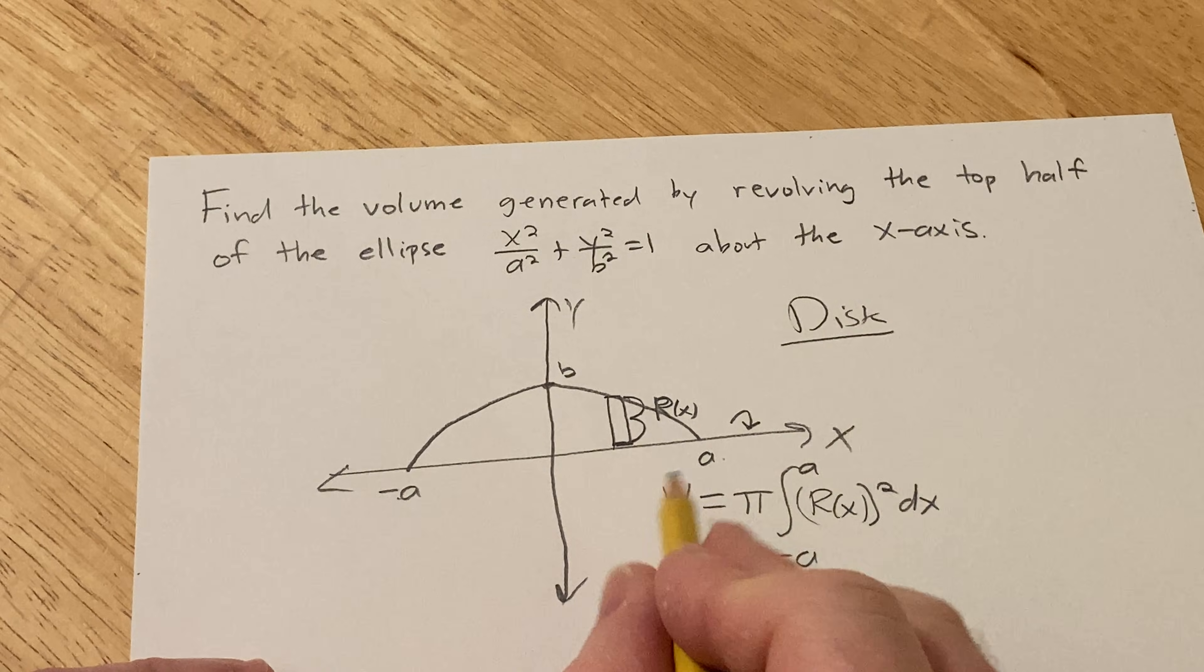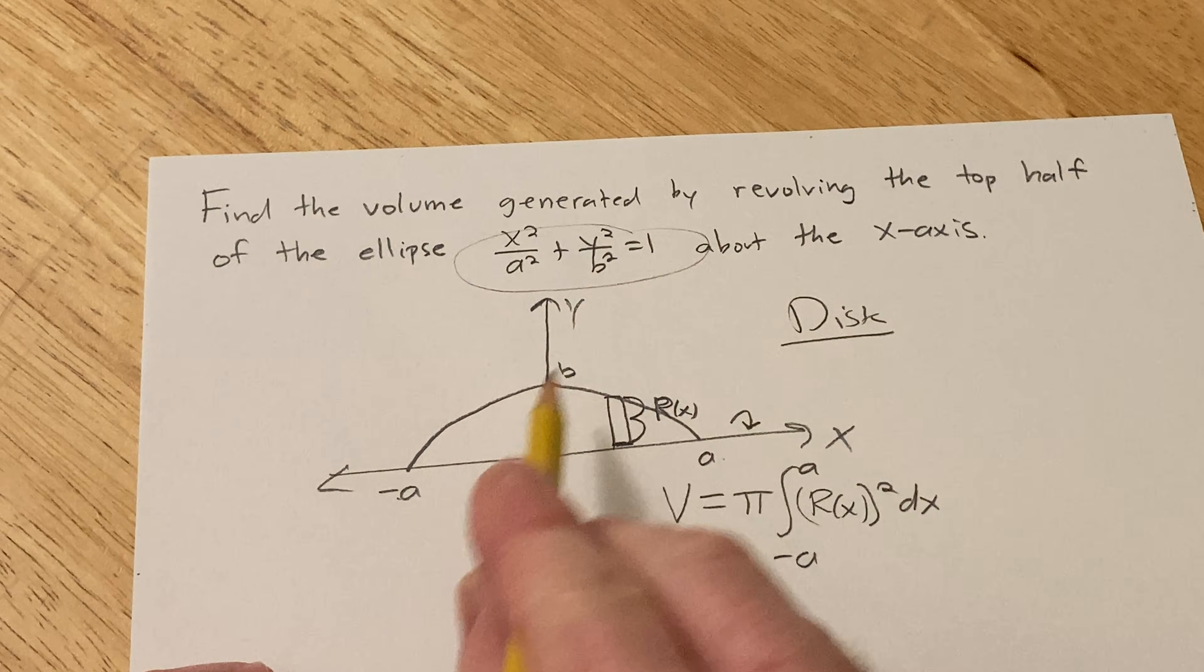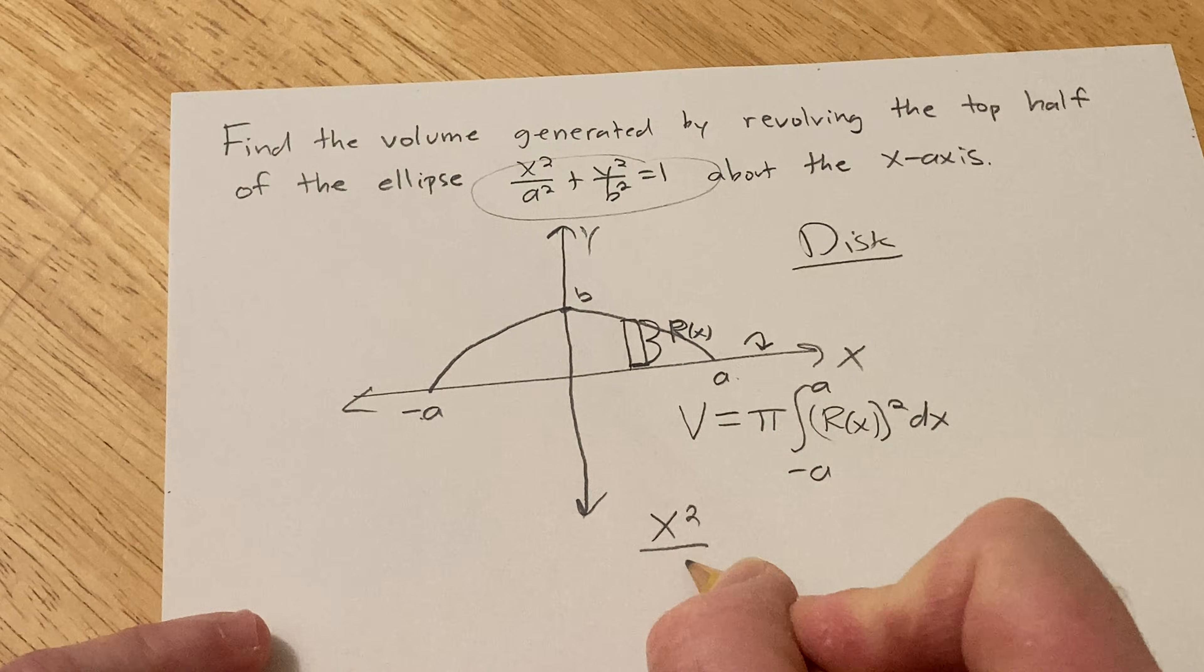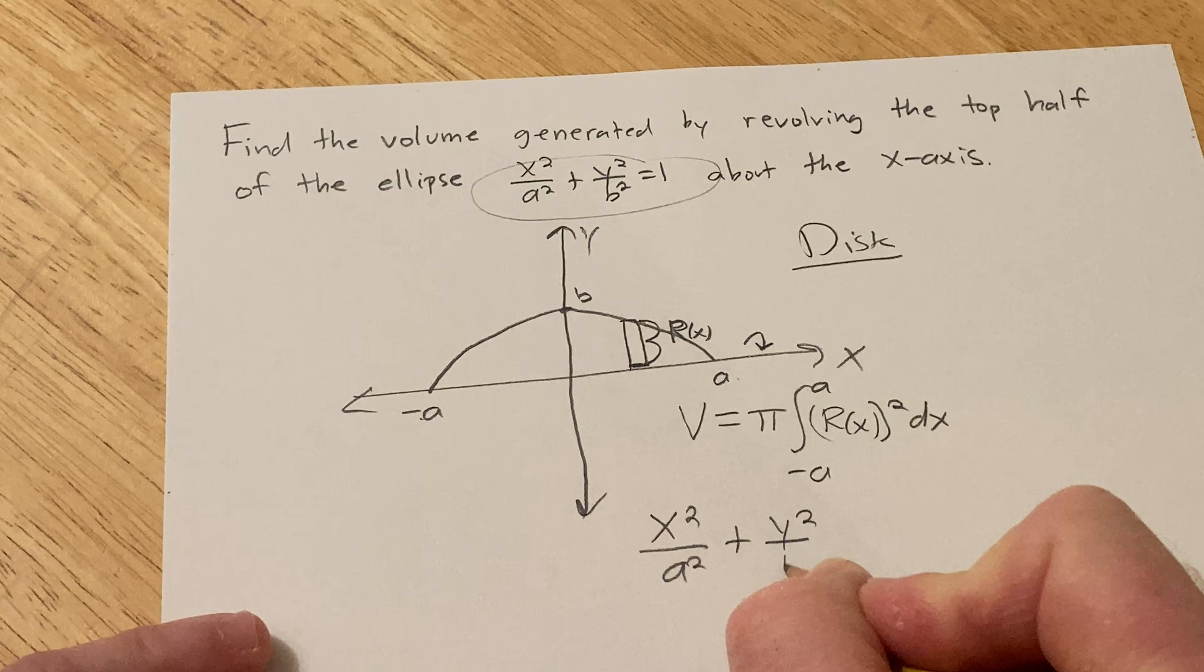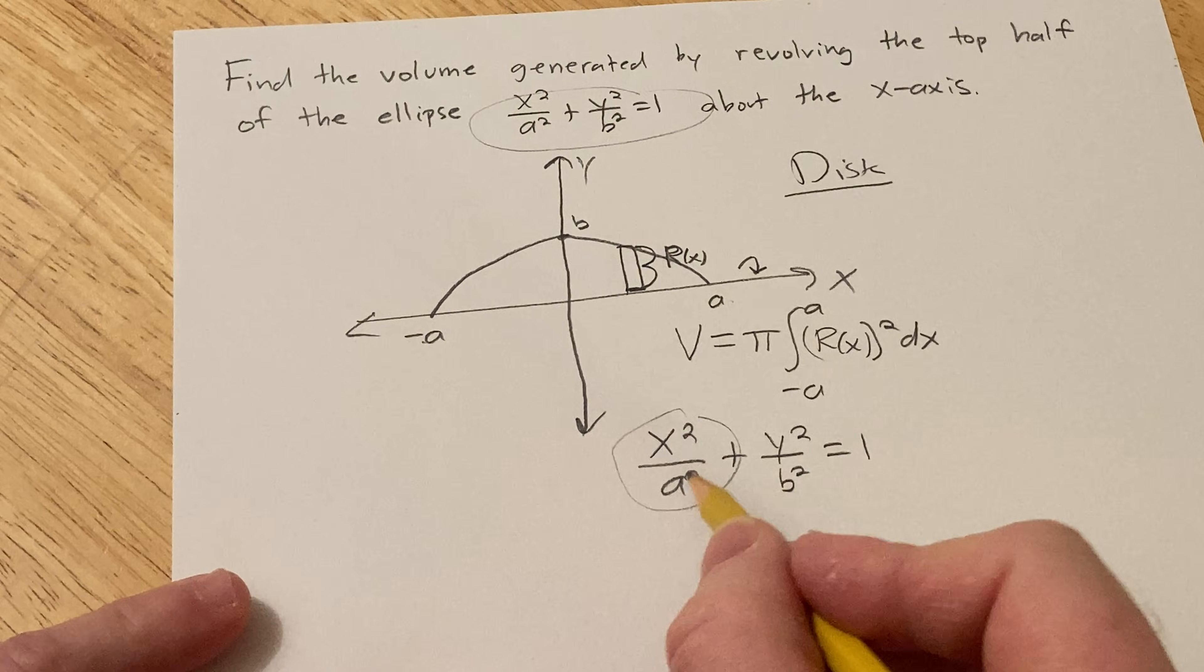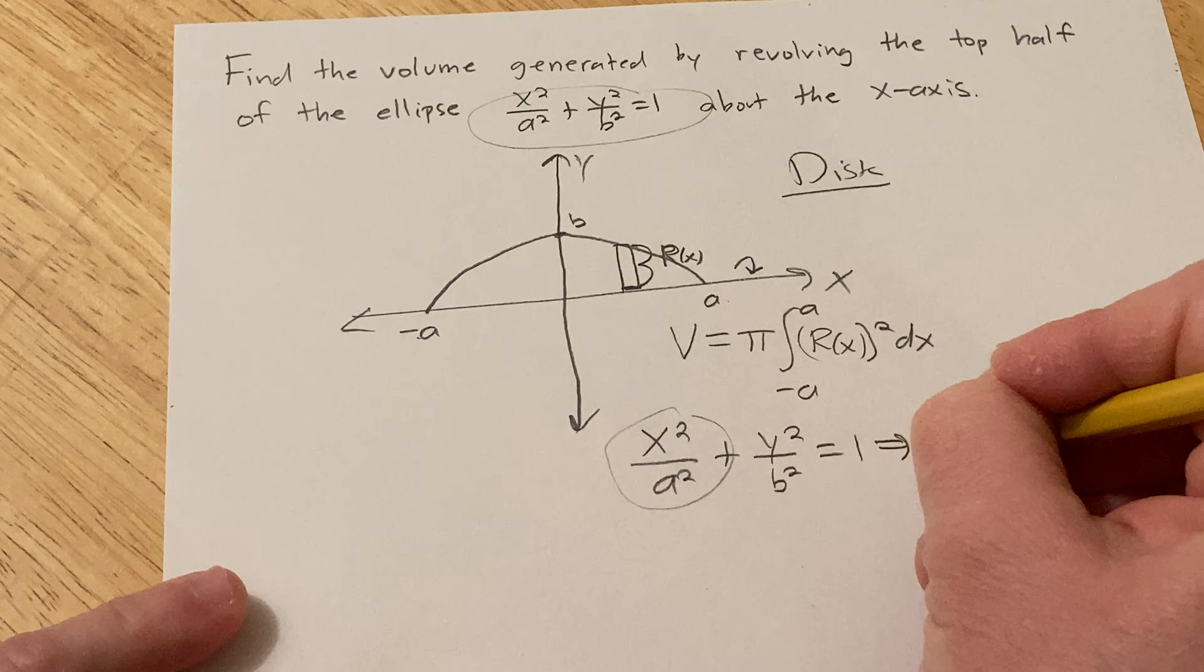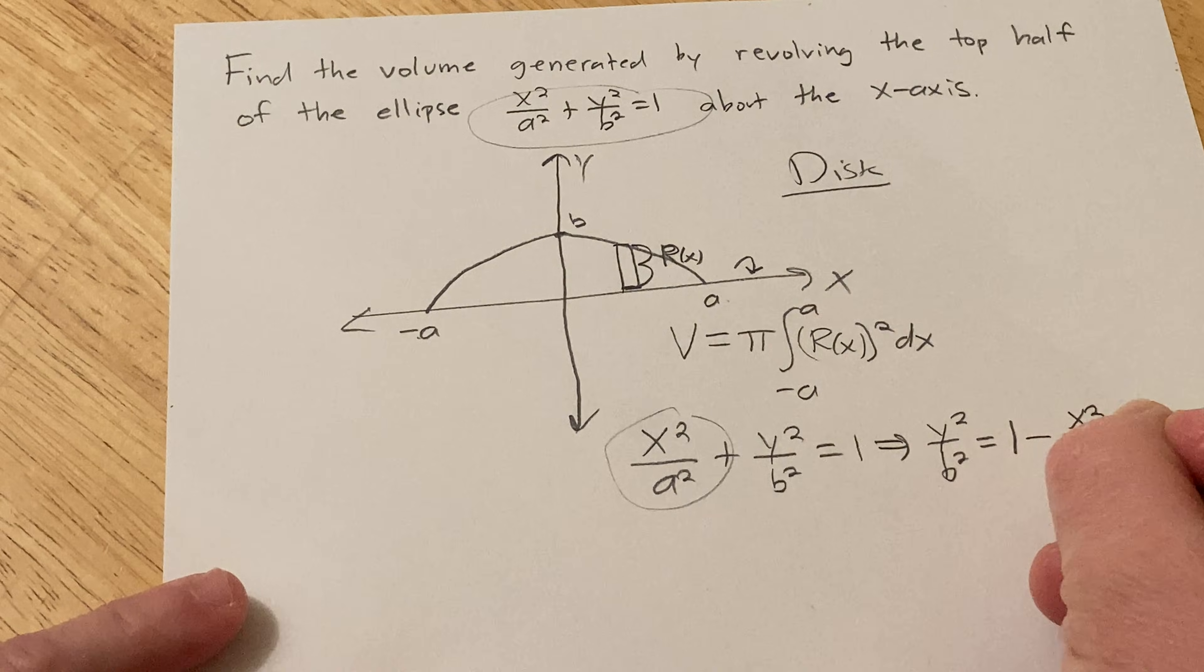Okay, so we just have to figure out what big R of x is. So let's take this equation here and see if we can manipulate it in some way that will allow us to do that. So we know that we have x squared over a squared plus y squared over b squared equals one. So let's go ahead and solve for y squared. We can subtract this from both sides. So that gives us y squared over b squared equals one minus x squared over a squared.